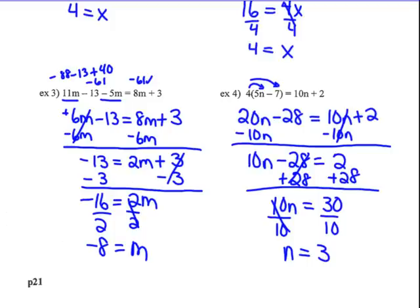Going back to check: 5 times 3 is 15, take away 7 is 8. So I have 4 times 8 on the left side, and 10 times 3 is 30 plus 2, that's 32, and 4 times 8 does equal 32. Yippee — I've got the right answer.